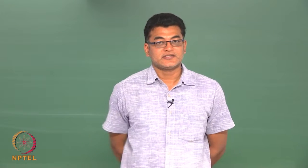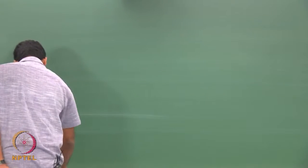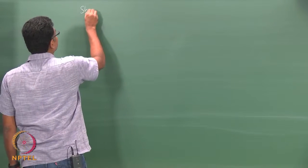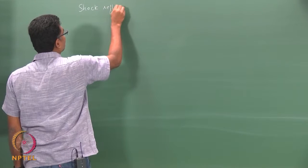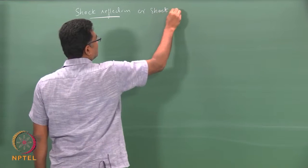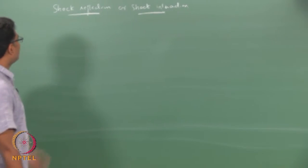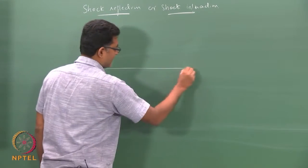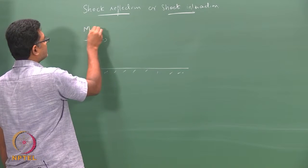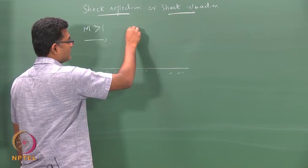We are going to extend the discussion on oblique shock to something called shock reflections — reflections or shock interactions, specifically shock-shock interactions. Suppose I have a plate here and I have a flow which is greater than Mach 1, and somehow I have an oblique shock here.